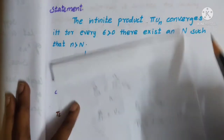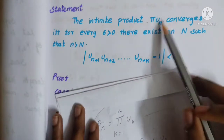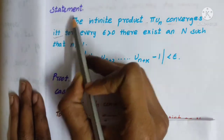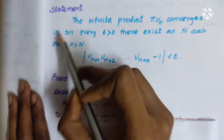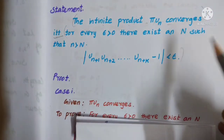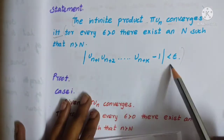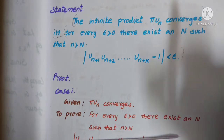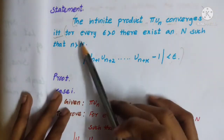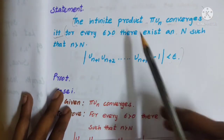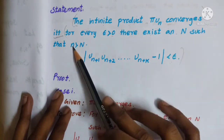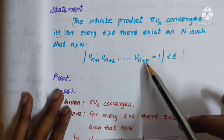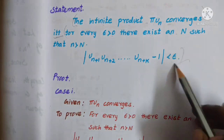If you know the finite product, the infinite product pi of Un converges if and only if: for every epsilon greater than 0, there exists N such that for n greater than N, the modulus of U(n+1) · U(n+2) · ... · U(n+k) minus 1 is less than epsilon. In this condition we will prove this.